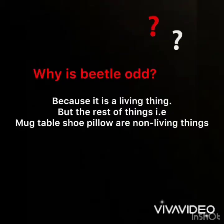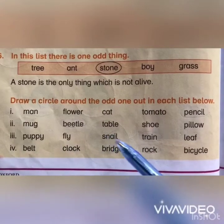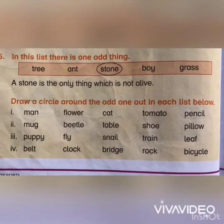Mug, beetle, table, shoe, pillow — beetle is the odd one in this list. Why is beetle odd? Because it is a living thing, but the rest of the things — mug, table, shoe, pillow — are not living things.